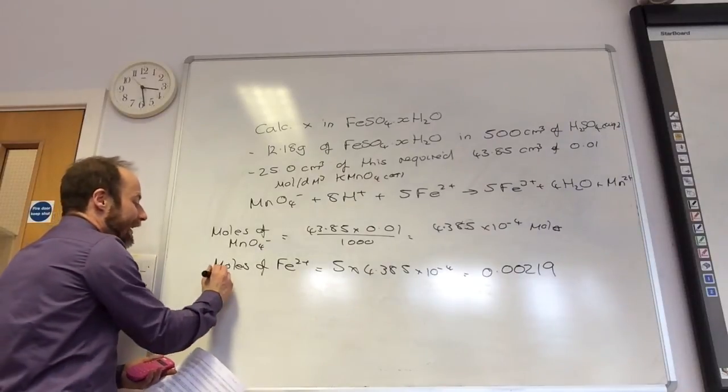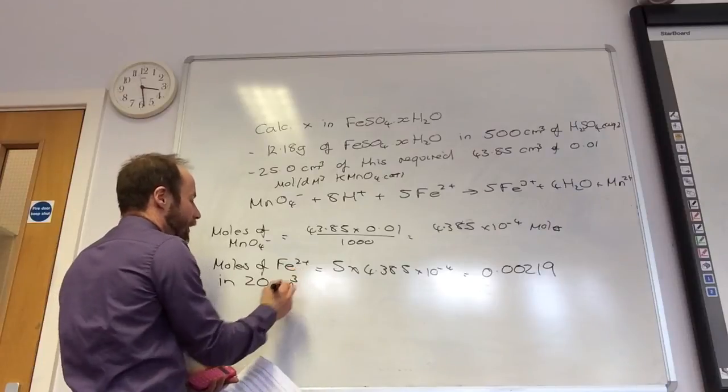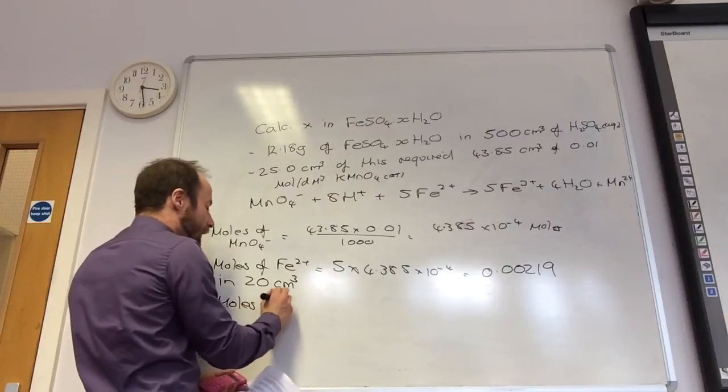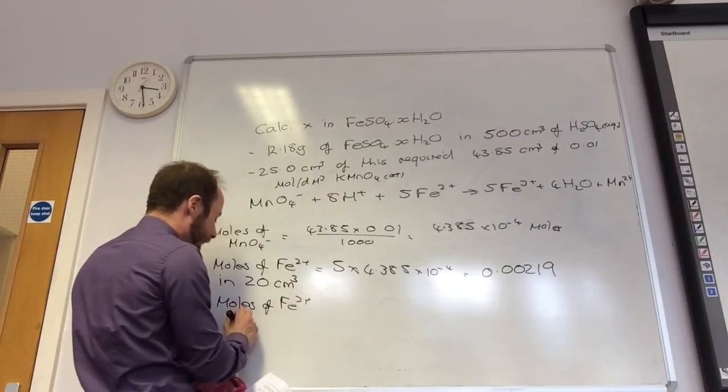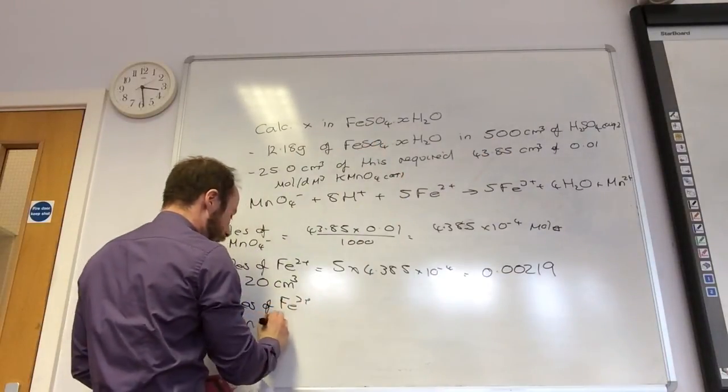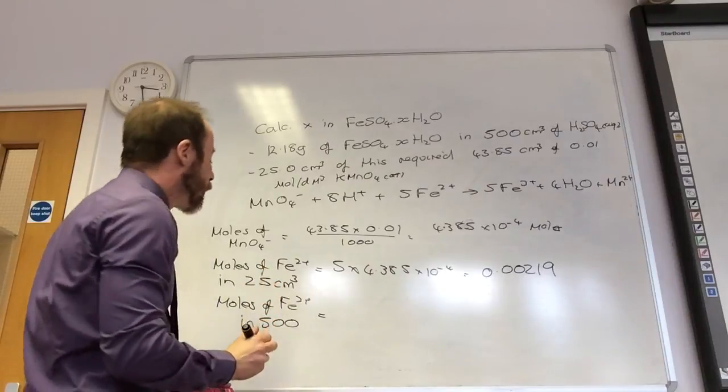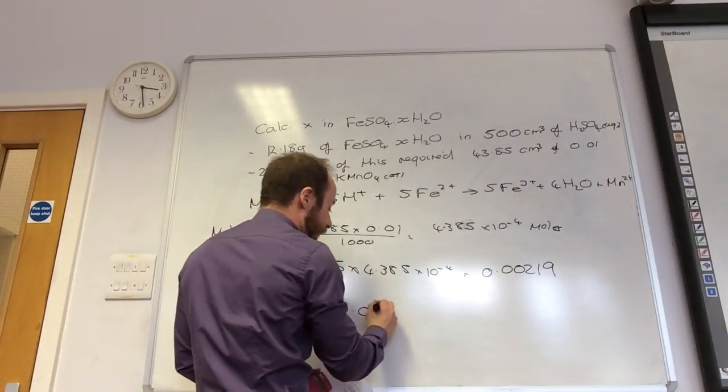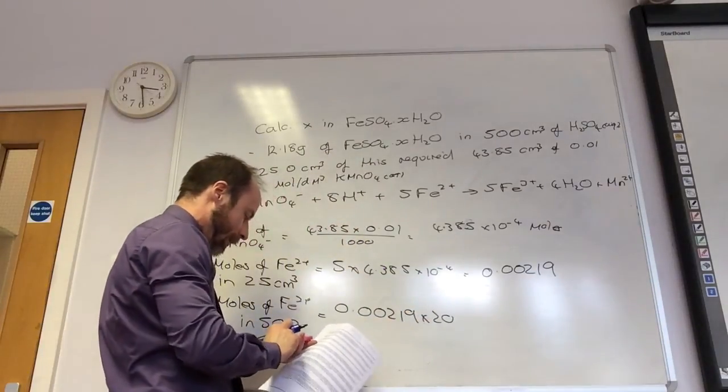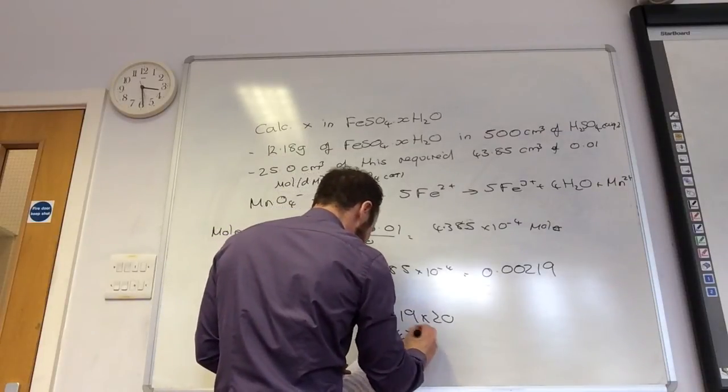What was that in? That was in 20 cm³. But what was the original solution? No, it was in 25. So, moles of Fe²⁺ in 500. And that was in 25. That was 25. Not 20. So, what do I need to times that by? 20. Yep. Times that by 20. That gives me 0.04385.